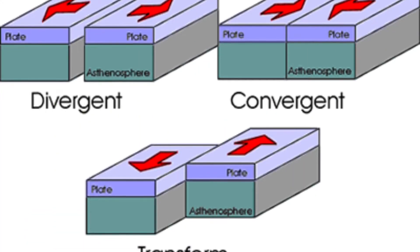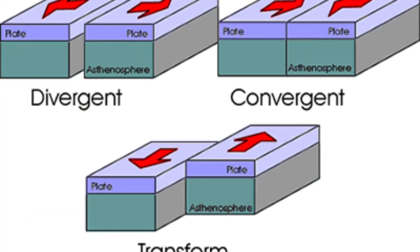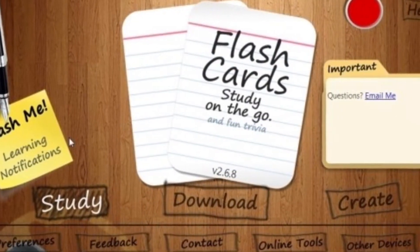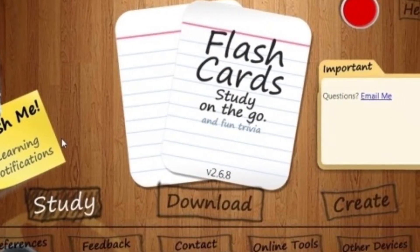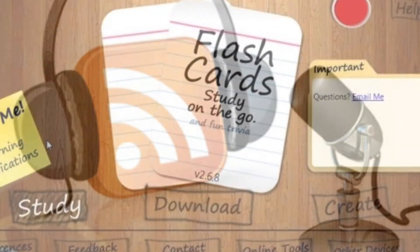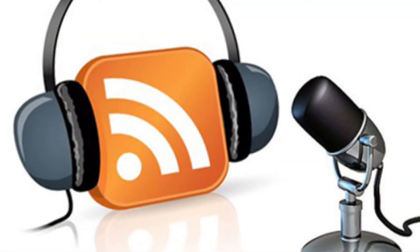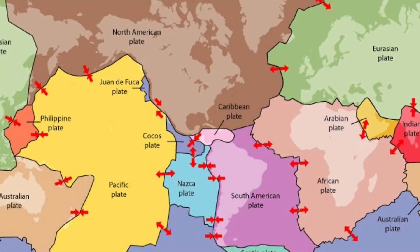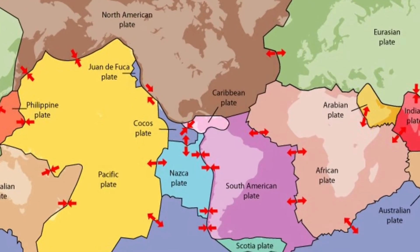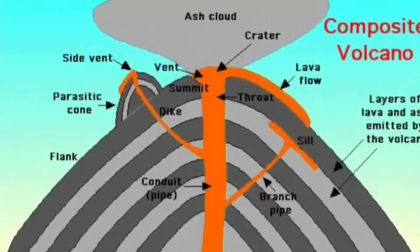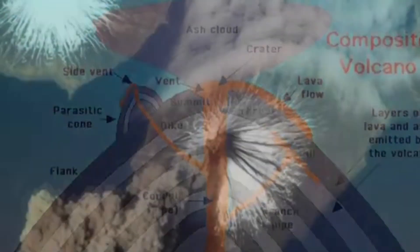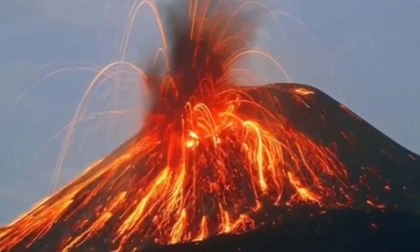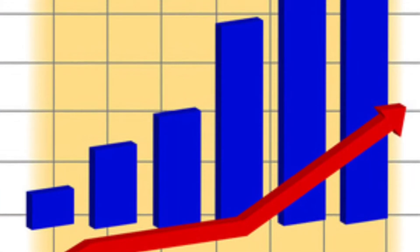Students will then gain an understanding of the different types of plate boundaries using a flashcard app to memorize essential vocabulary terms. They will create a podcast to demonstrate their understanding of plate boundary activity. After that, students will classify the different types of volcanoes, cite real life examples, and sort them using graphs and Microsoft Word.